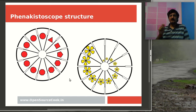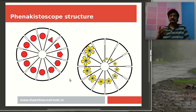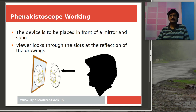The next thing is you will have to mount the disk on something so that you can rotate it easily. The animation effect is based on persistence of vision. You don't look at it directly — you need a mirror. The printed side or design side faces the mirror, and you look at it through one of the slots, focusing on the mirror at one particular point. When you rotate the disk at a certain speed, you will see the animation.